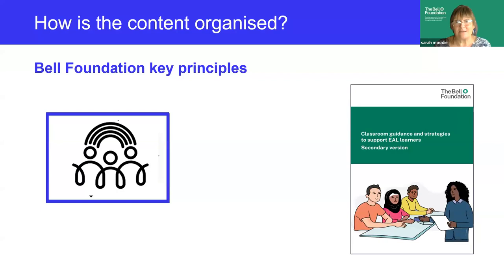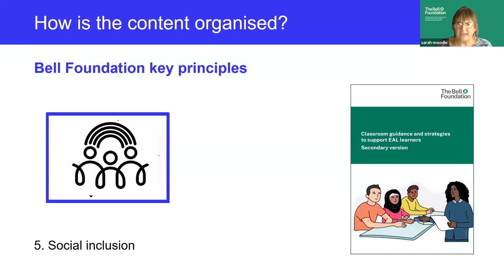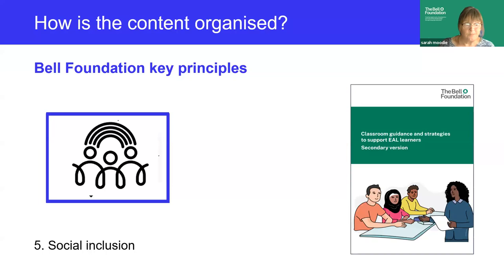Last but not least, our fifth key principle: strategies which will facilitate social inclusion. Learners using EAL — including new arrivals, those at the earliest stages of English acquisition, and late arrivals in key stage four — need to be able to look around them in school and feel that this is somewhere they can learn, thrive and be themselves. They need to feel safe and secure and have a sense of belonging to their school and through that to the wider community, in order to maximise their opportunities. This is especially important for children seeking asylum.